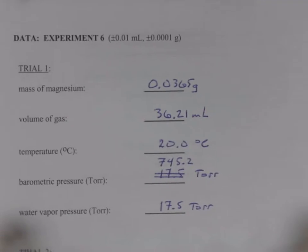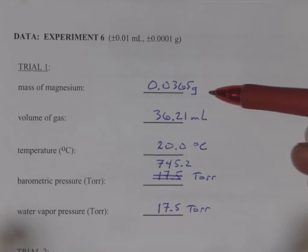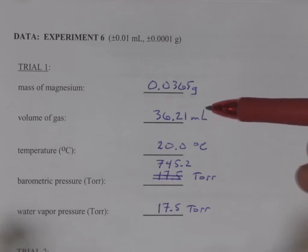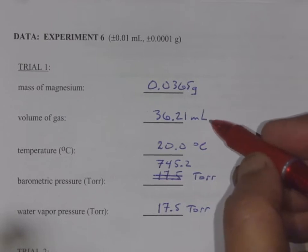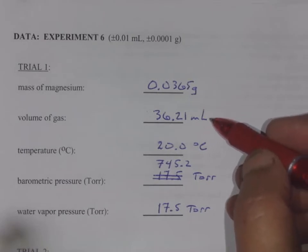So collecting the data, here's some contrived data. And what we're going to do is just run through the mass of magnesium for trial one, 0.0365 grams. Go ahead and write that on your data sheet. Pause as you need. The volume of collected gas is 36.21 mLs. And recognize this gas is not just hydrogen, but it's also water vapor because the hydrogen has bubbled through that test tube full of water. Yeah, that's the volume, but it's a mixture of things.